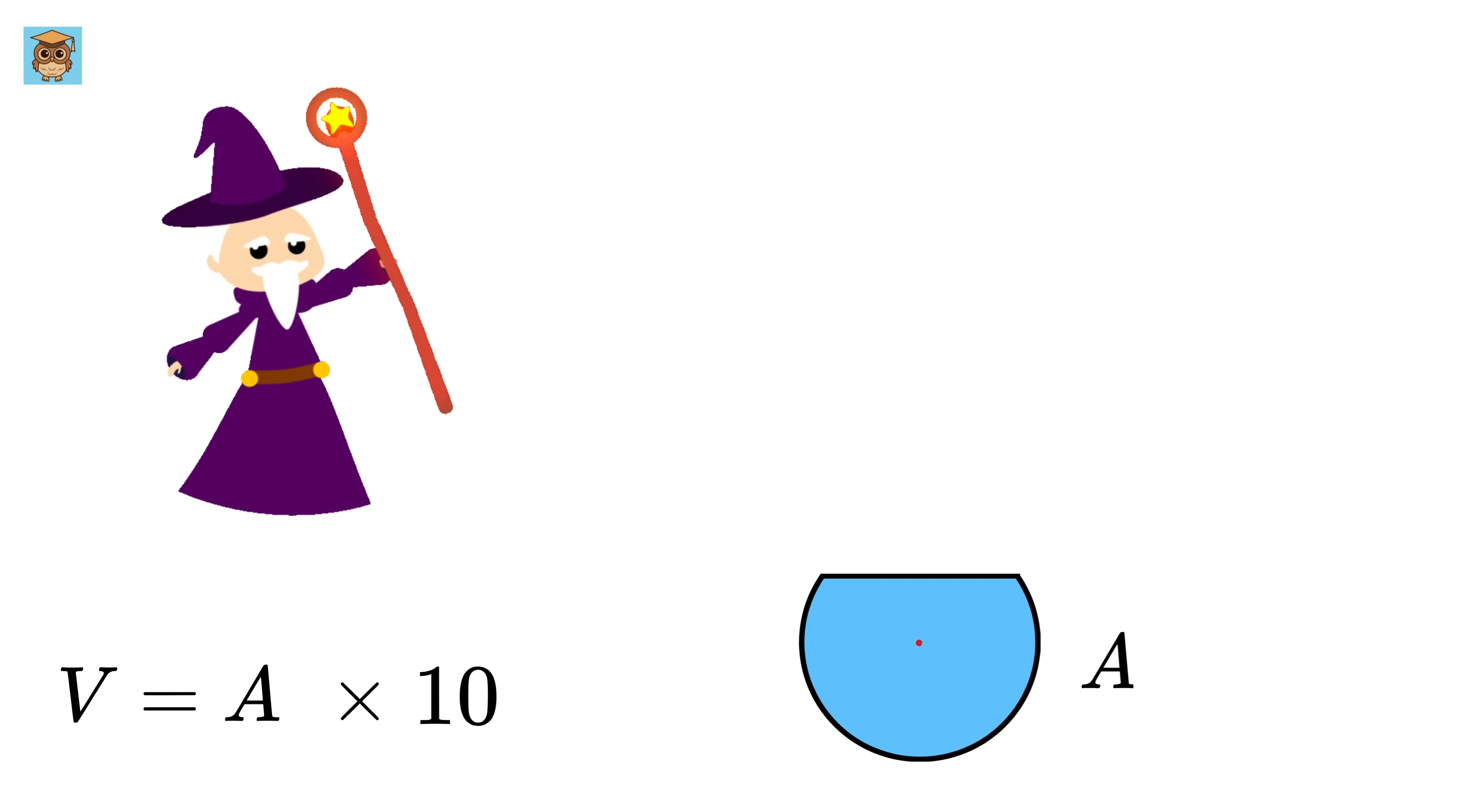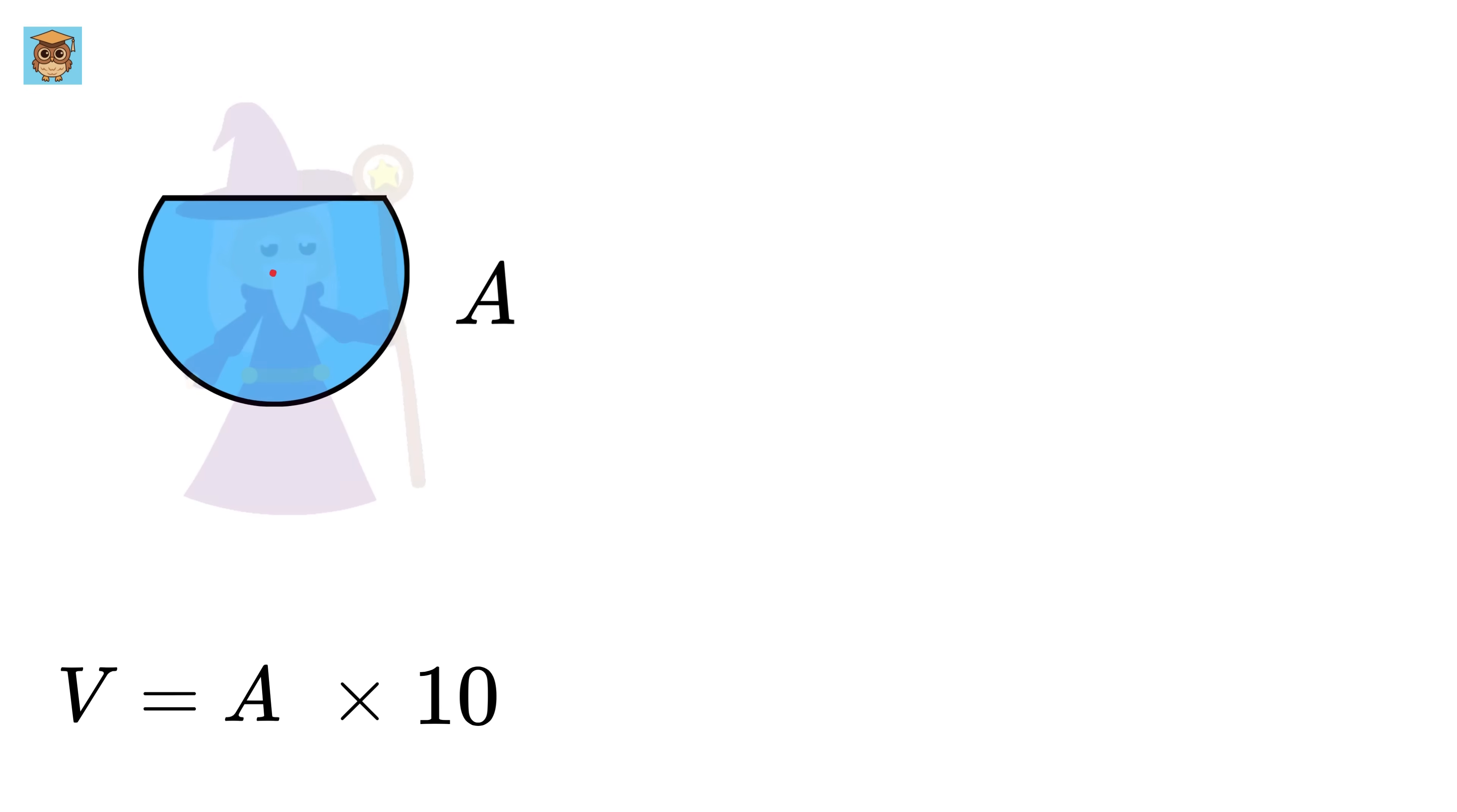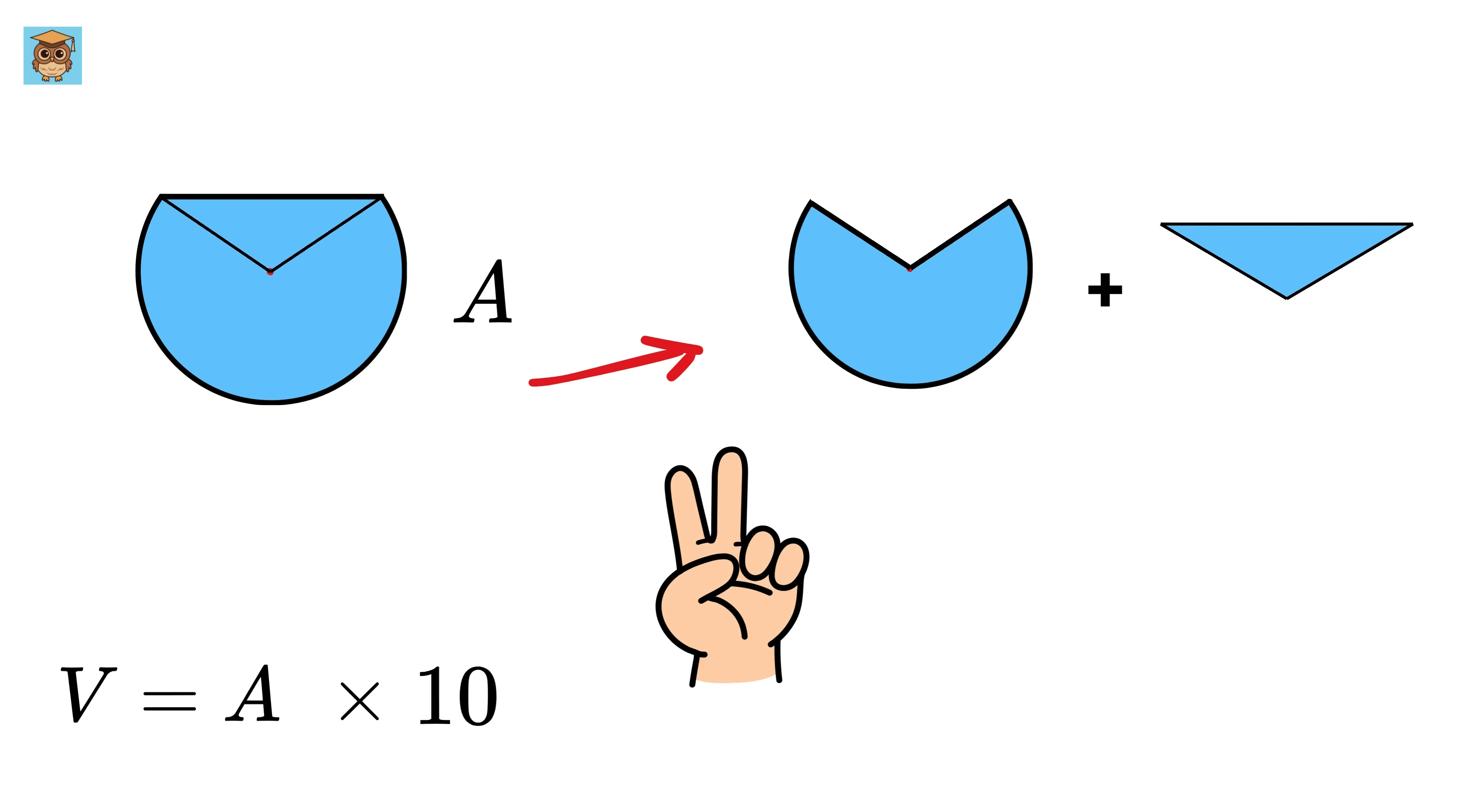Now here comes the magic. Let's focus on the cross section. We want to calculate the area of this blue region. This blue region can also be divided into these two parts: the circular segment and this triangle. Now this is 6 and this is 4, so this will be equal to 2.